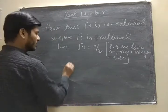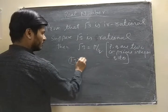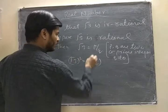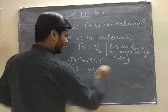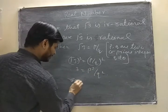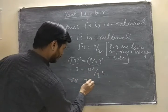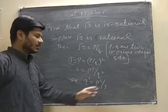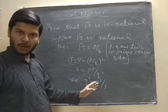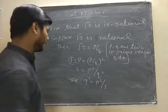Now squaring on both sides, rearrange. Here, 3 divides P square, or we can say that 3 divides P.